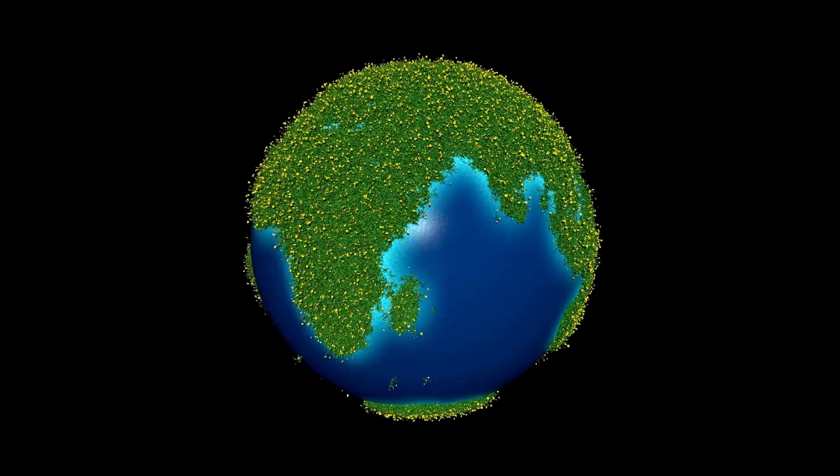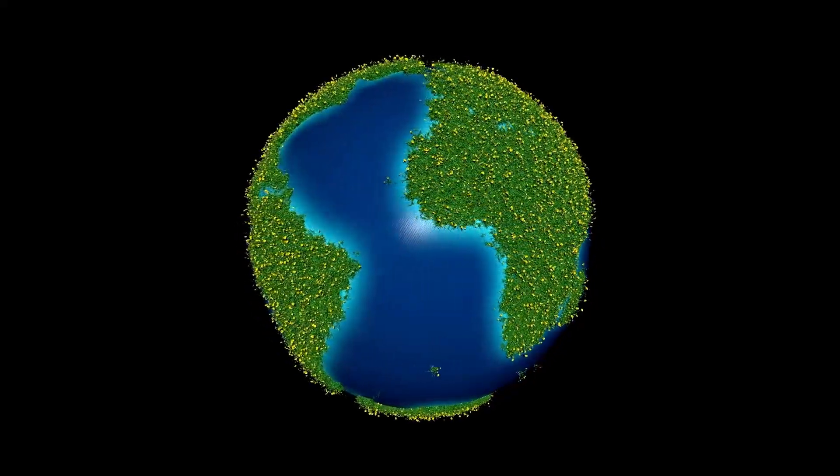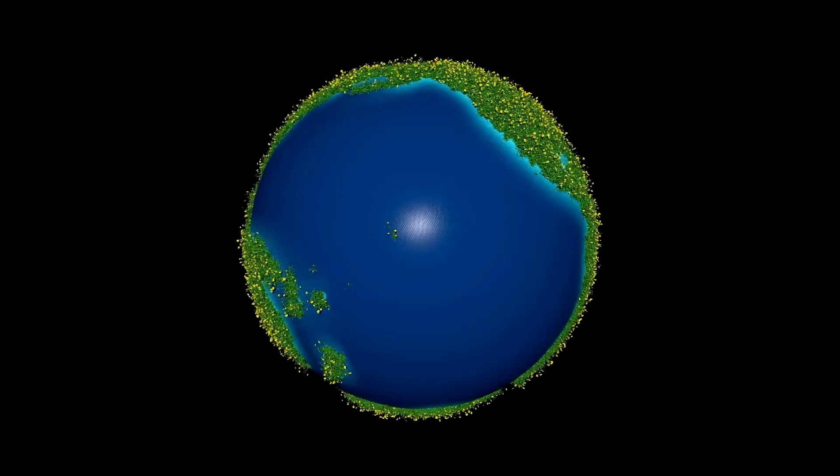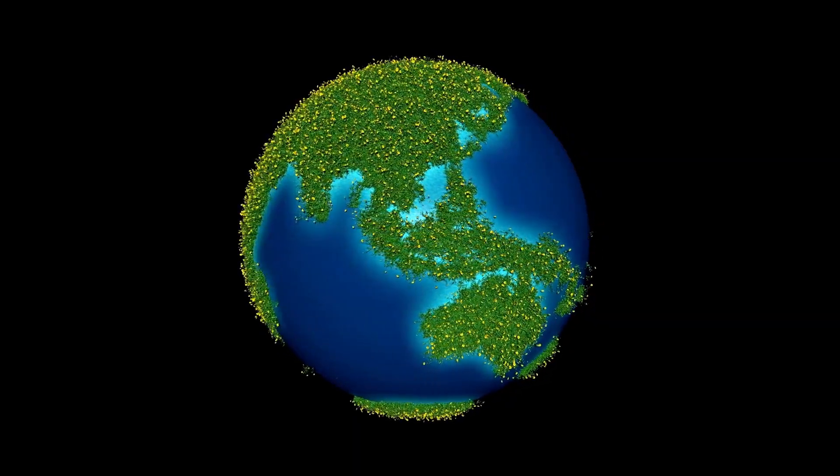Some compared these patterns to mathematical constants. Others pointed out eerie resemblances to ancient symbols found carved into stone on Earth. To many, it looked less like a comet's chaotic reflection of sunlight and more like a message, a display aimed at Mars.